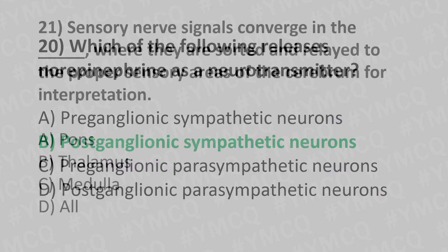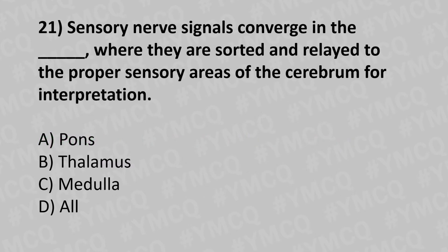Moving to our twenty-first question. Sensory nerve signals converge into the dash, where they are sorted and relayed to the proper sensory areas of the cerebrum for interpretation. Option A: pons. Option B: thalamus. Option C: insula. Option D: all. And the answer is option B: thalamus.